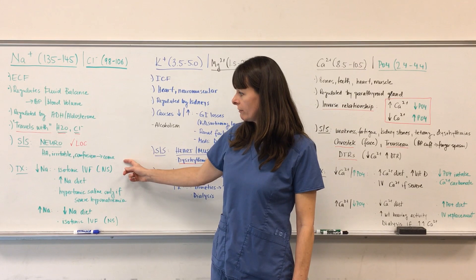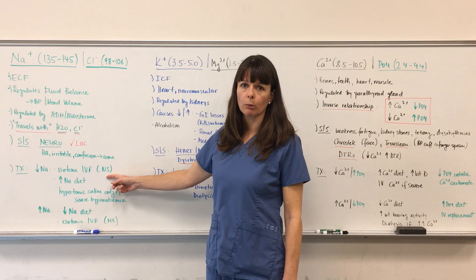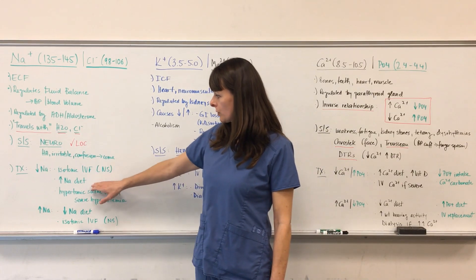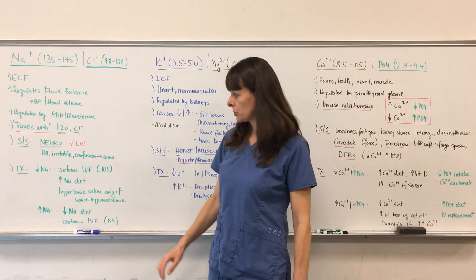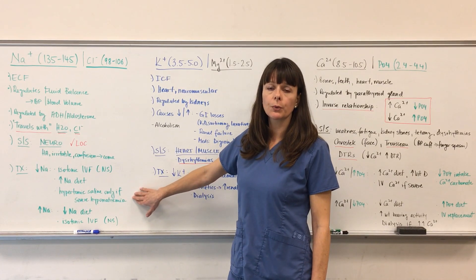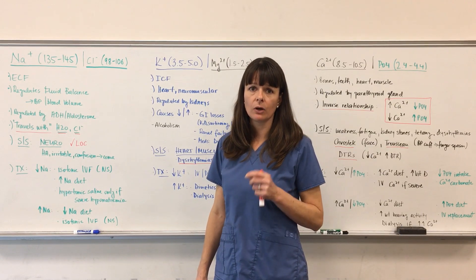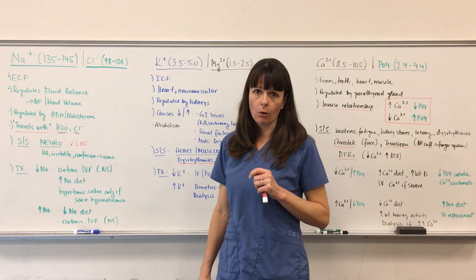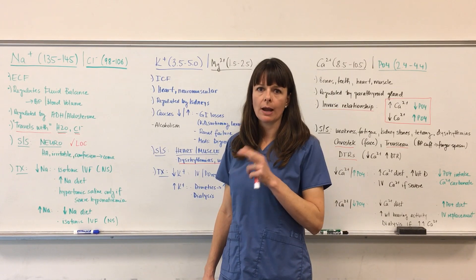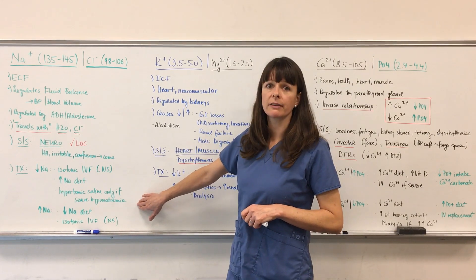When the patient's sodium level is low, we want to give them normal saline, which is 0.9% sodium chloride, to replenish the sodium they've lost. We also want to increase sodium in their diet. We could also give them hypertonic saline, which would be 3% sodium chloride, but only if the hyponatremia is extremely low, 120 or below. Refer to my video on basic fluid and electrolyte balance and the administration of hypo, iso, and hypertonic solutions and how that applies to fluid shifts. Hypertonic saline only if there's severe hyponatremia.